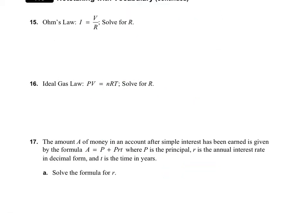Number 15 is a continuation — we need to solve for R, and R is in the denominator, which is a tricky spot. I need to get it out of the denominator by multiplying both sides by R. When I do that, I get R times I equals V. Now I divide by I on both sides, and we get R equals V over I.